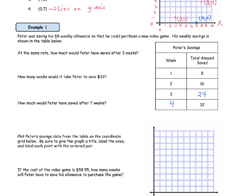So the first question says, at the same rate, how much would Peter have saved after three weeks? So here's three weeks. If we move over to the right, it looks like he has saved three times eight, which is $24.